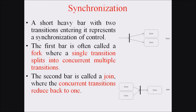A synchronization is a short heavy bar. Two transitions entering it represent a synchronization of control. The first bar is often called a fork, where a single transition splits into concurrent multiple transitions. The second bar is known as a join, where concurrent transitions reduce back into a single transition. The combination of fork and join is known as a synchronization.